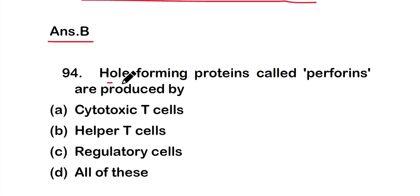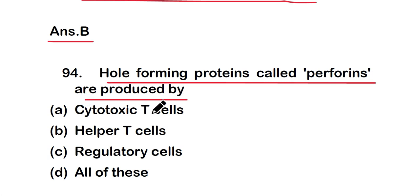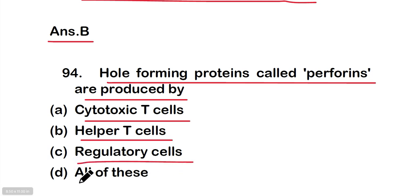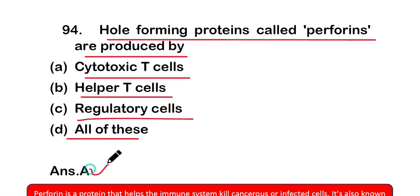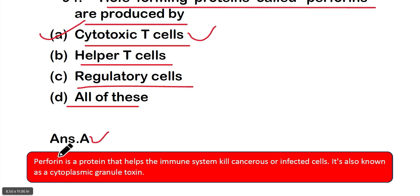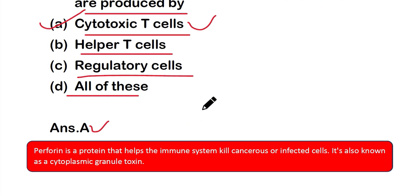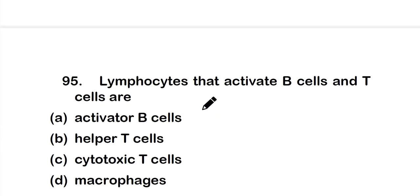Question number 94: Pore-forming proteins called perforins are produced by — option A: cytotoxic T cells, option B: helper T cells, option C: regulatory cells, or option D: all of the above. The right answer is option A — perforins are produced by cytotoxic T cells. Perforin is a protein that helps the immune system kill cancerous or infected cells, also known as a cytoplasmic granule toxin.